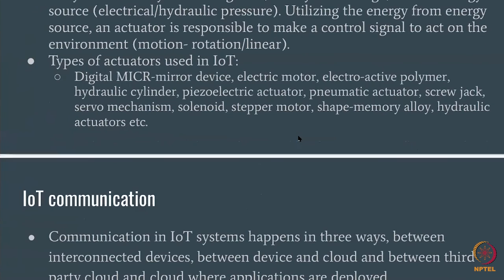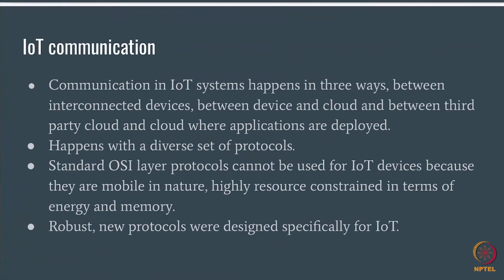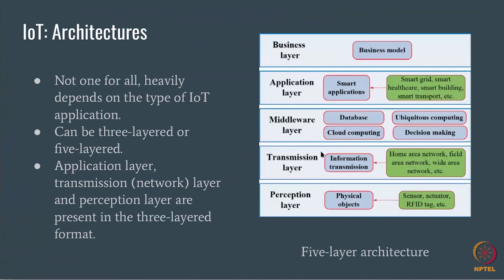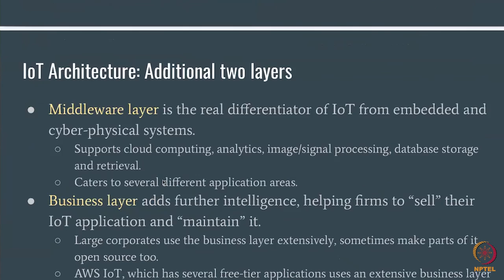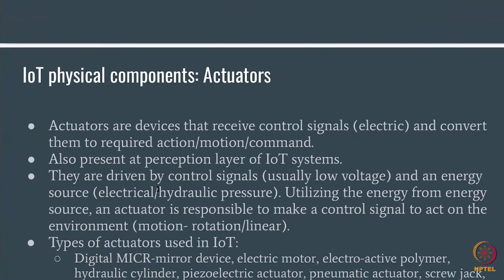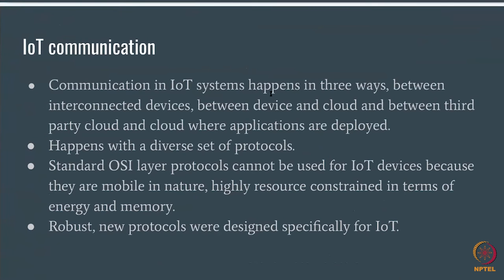Now let's talk about communication in IoT. In embedded systems you can communicate by wiring — HDMI, RS-232, USB. In IoT, not all communication happens by stringing together wires. You might use a phone to send data, give a command through Alexa, or get a notification or email. Communication in IoT happens in three ways: device to device, device to cloud, or between a third-party cloud and the application cloud.